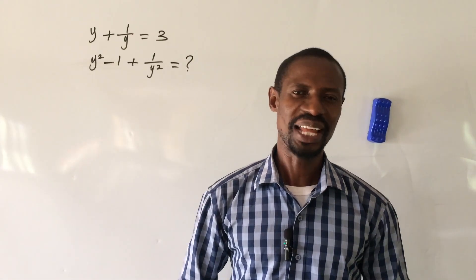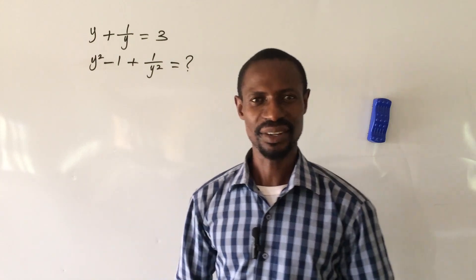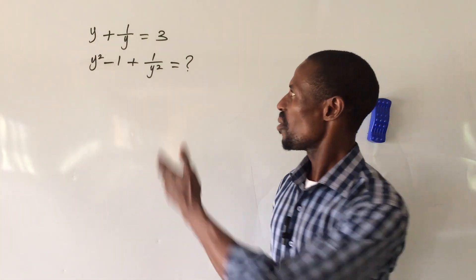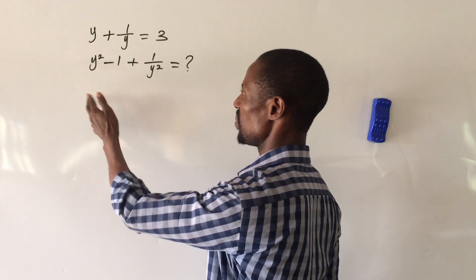All right, welcome to Online Math TV. My name is Jake's Animal, and here we have a challenge on the board. The question reads: y plus 1 over y equals 3. Then what will be the value of y squared minus 1 plus 1 over y squared?